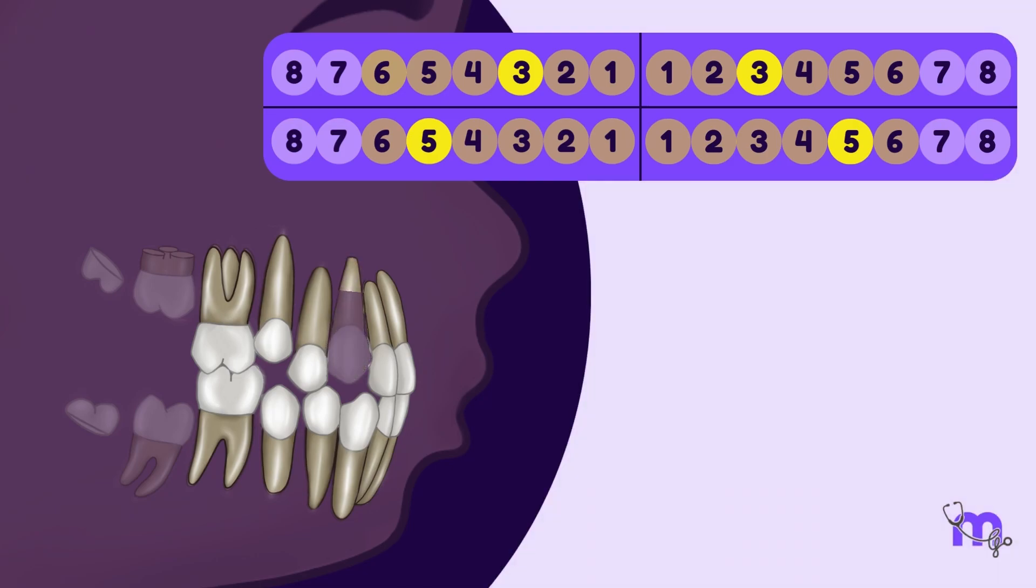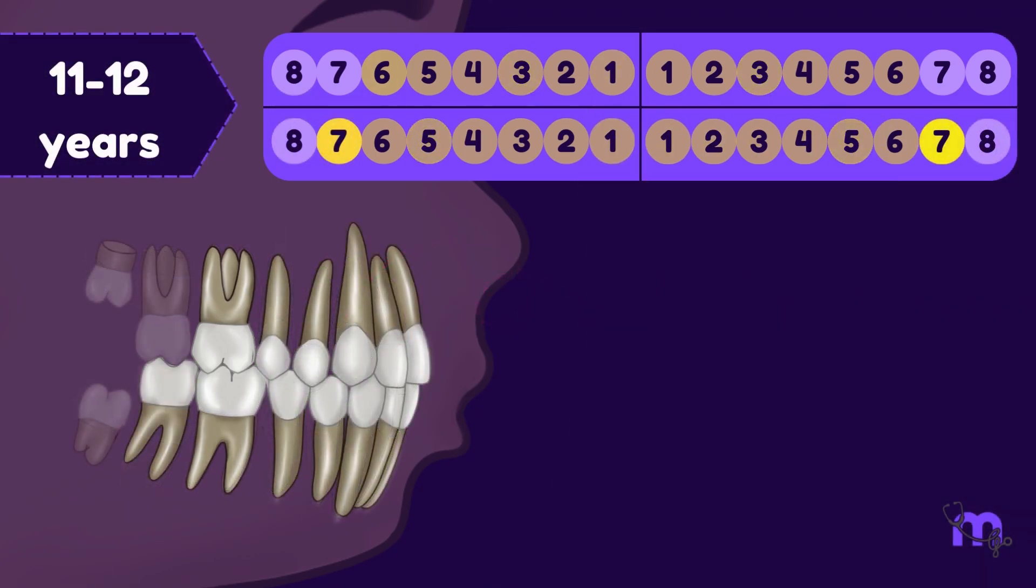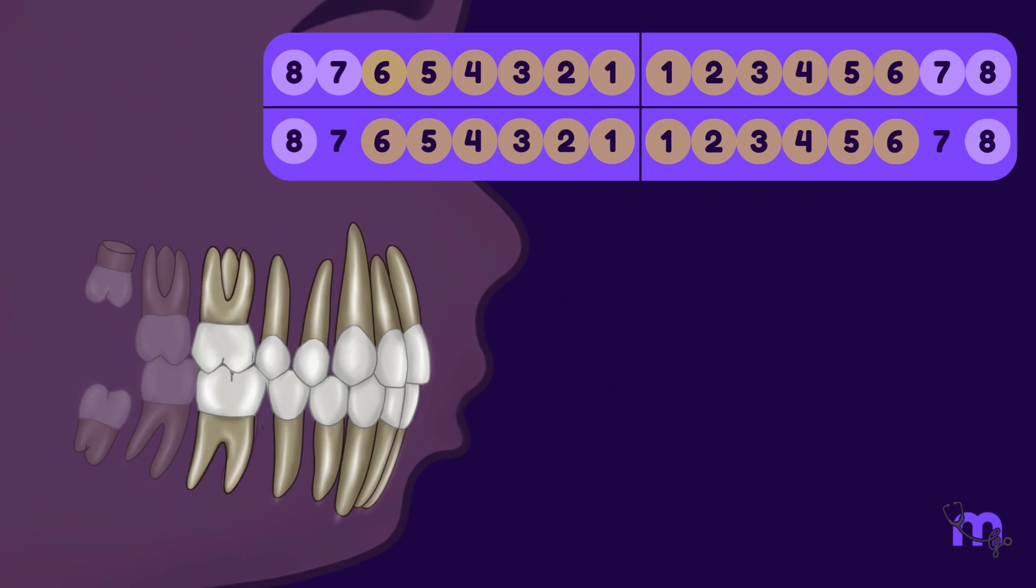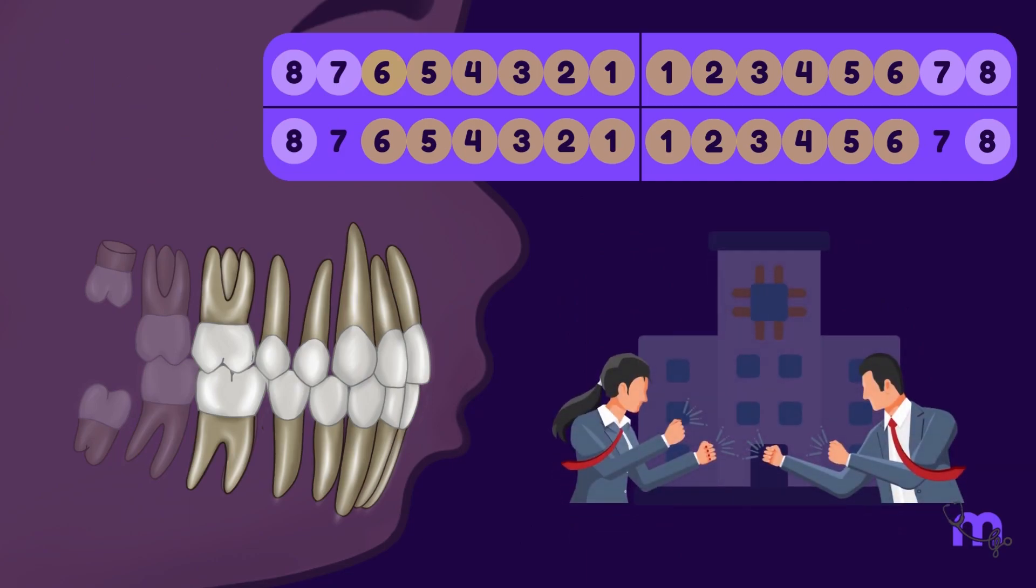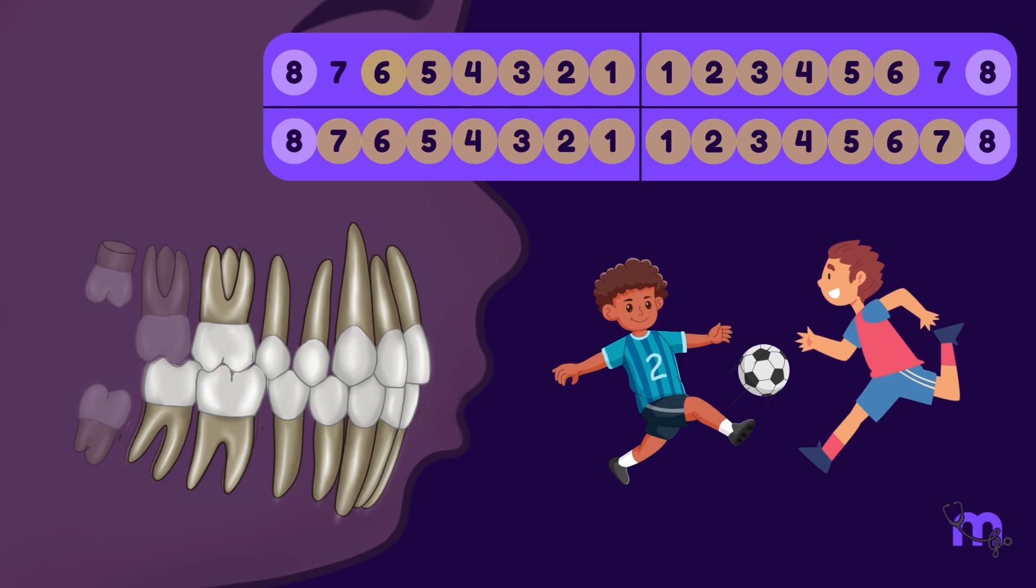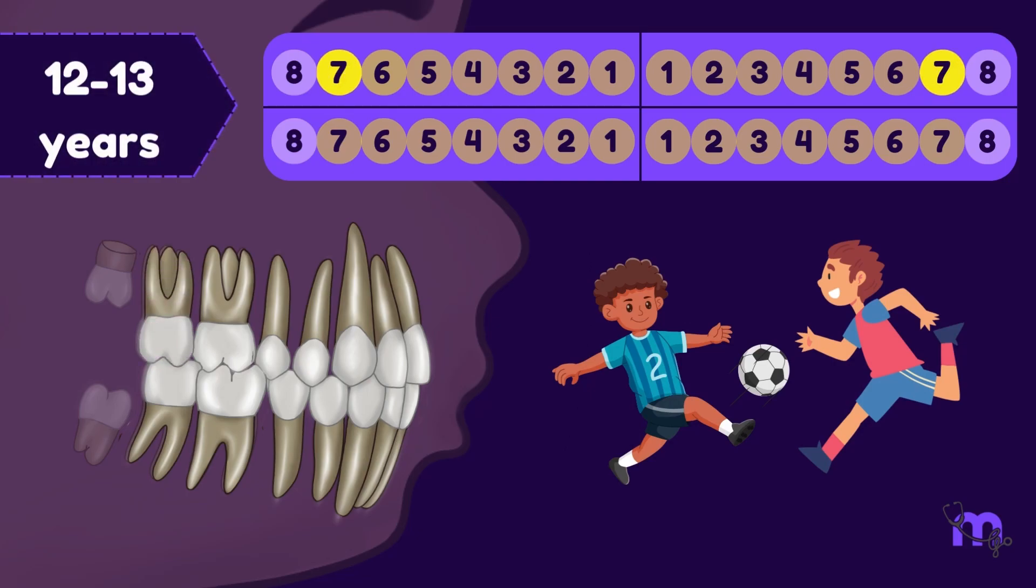The maxillary canine has a long route, making its eruption path longer. In a big moment, like a competition in the teenage years, the second molars of both maxilla and mandibular compete like big tech companies. The mandibular second molars take the lead between 11-13 years, showing friendly competition and progress, while the maxillary second molar erupts at about 12-13 years.